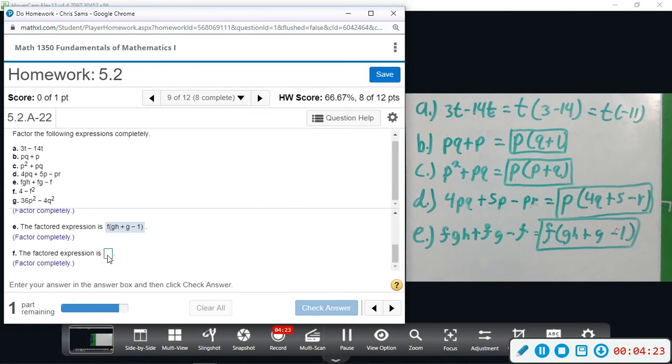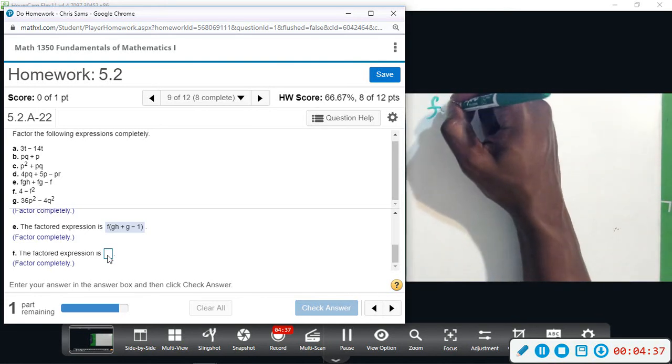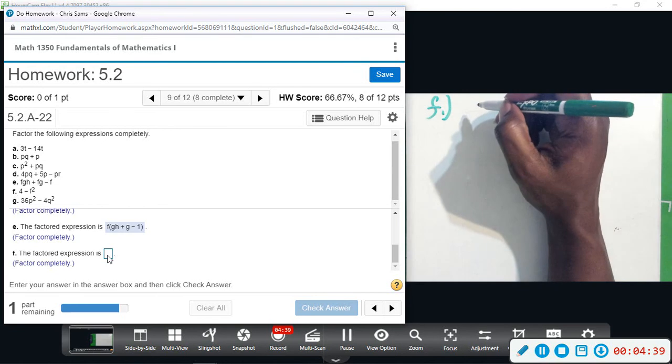So I never pulled g's out because everything has to have a g, so just the f there. So we have f and g left. Part f: we have 4 minus f squared.